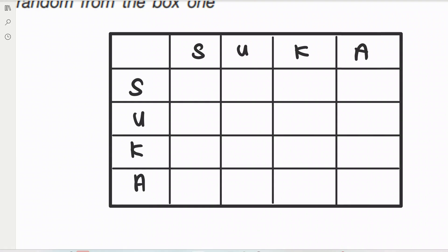Since it's without replacement, if you take the S card, the second card cannot be S again because there is only one S. So we cancel off the diagonal — S-S, U-U, K-K, A-A cannot happen. That's why I say the table is not compulsory, but it makes things easy to understand.